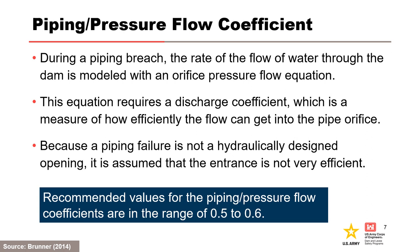During a piping breach, the movement of water through the dam is modeled as a pressurized orifice type of flow. The rate of water flowing through the dam is modeled with an orifice pressure flow equation, which requires a discharge coefficient — a measure of how efficiently the flow can get into the pipe orifice. Because a piping failure is not a hydraulically designed opening, it is assumed that the entrance is not very efficient. Recommended values for the piping slash pressure flow coefficients are in the range of 0.5 to 0.6.